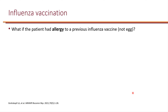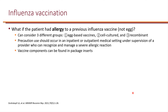What if the patient had allergy to a previous influenza vaccine ingredient — not just egg allergy? We can consider three groups: people with allergy to an egg-based vaccine, people with allergy to cell-cultured vaccine, and people with a history of reaction to a recombinant vaccine. When the CDC says precaution regarding allergies, use should occur in an inpatient or outpatient medical setting under supervision of a provider who can recognize and manage a severe allergic reaction. Vaccine components can be found in the package insert.